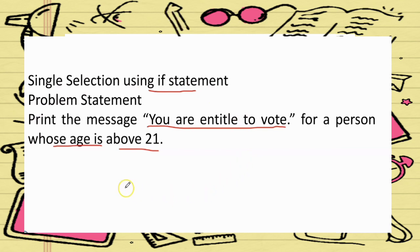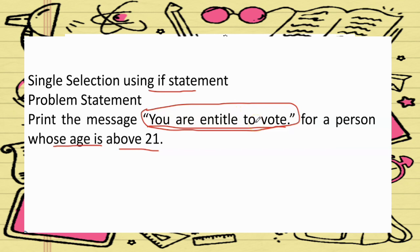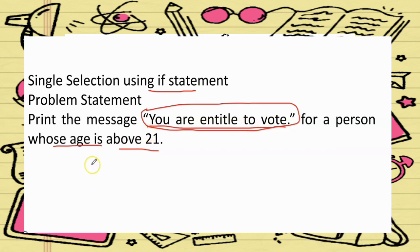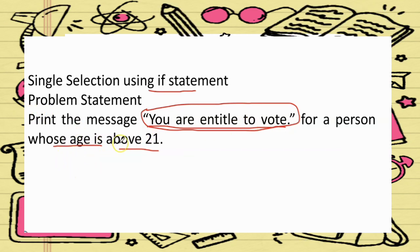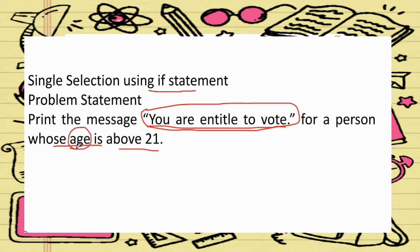For this problem statement, what is the output? The output is 'You are entitled to vote', or no output — since it is a single if statement. Second, what is the input? Based on this problem statement, age is above 21, so it is clear that age is the input. For process, determine whether the age entered is greater than 21 or not.